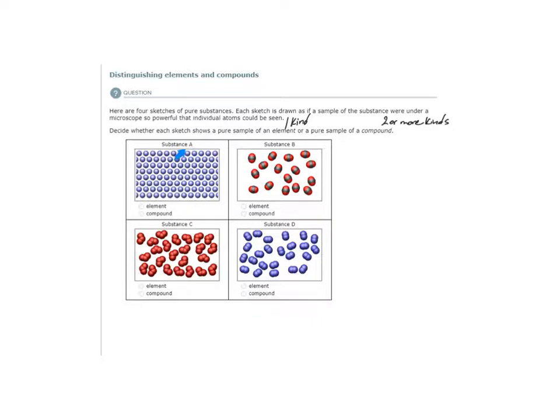So let's look at substance A. I see a bunch of individual atoms here. They're all the same color which would suggest they are all the same kind of atom. That would be an element.